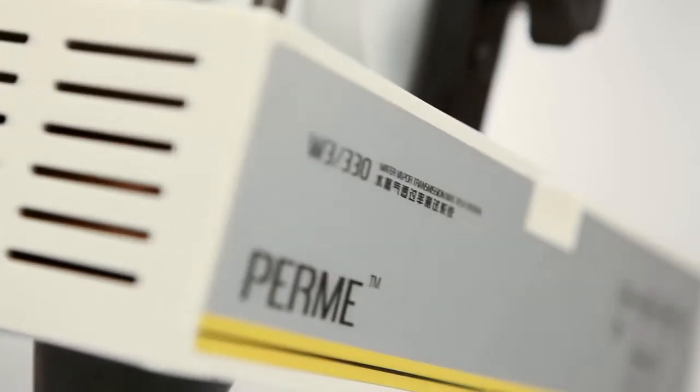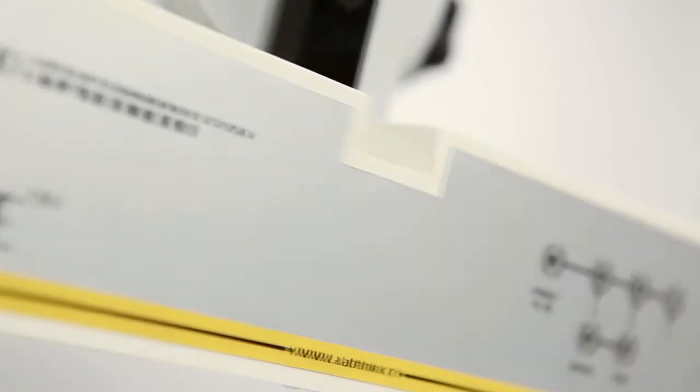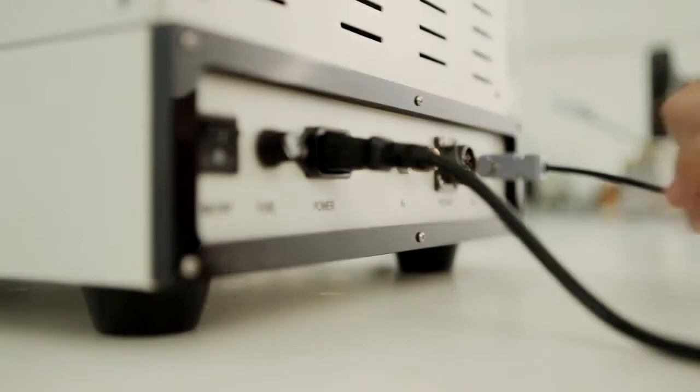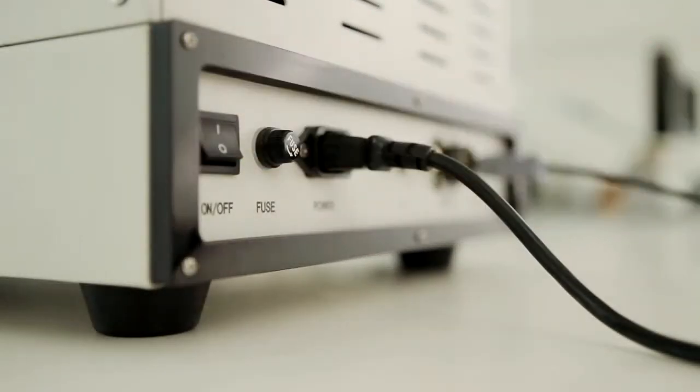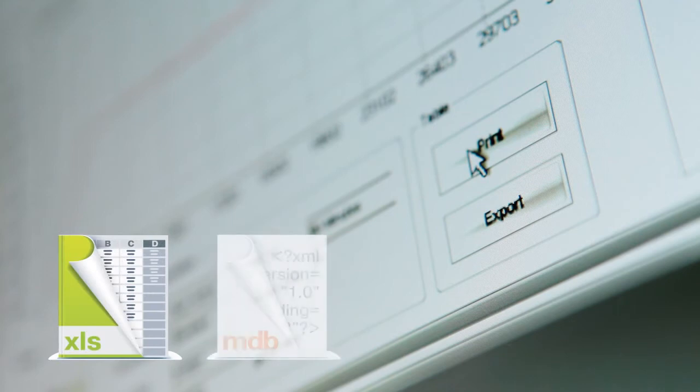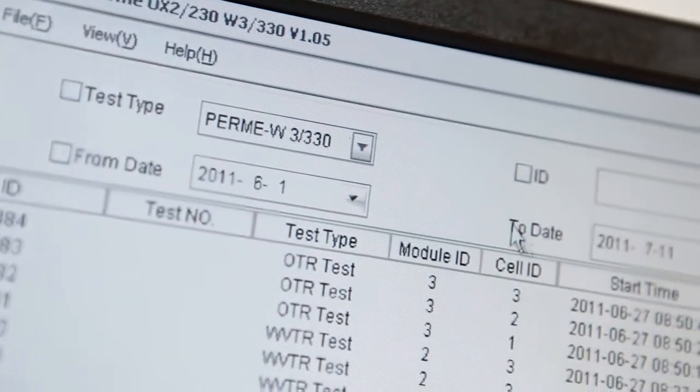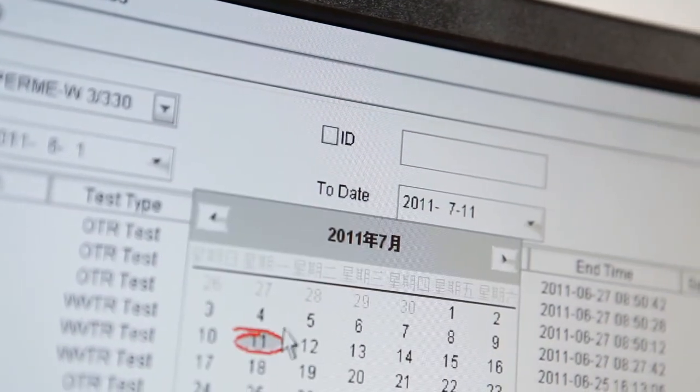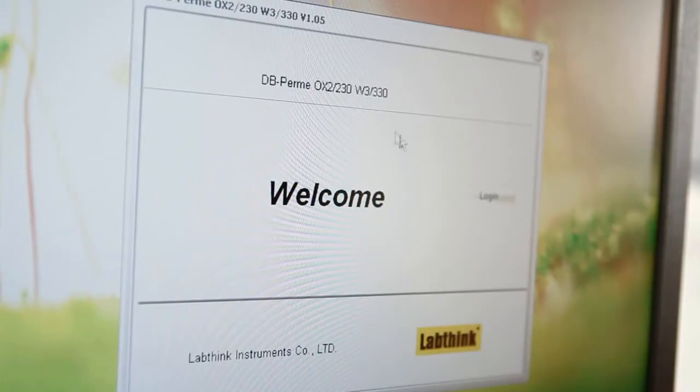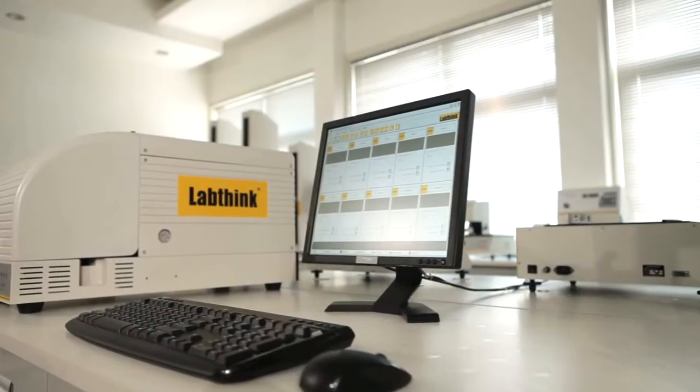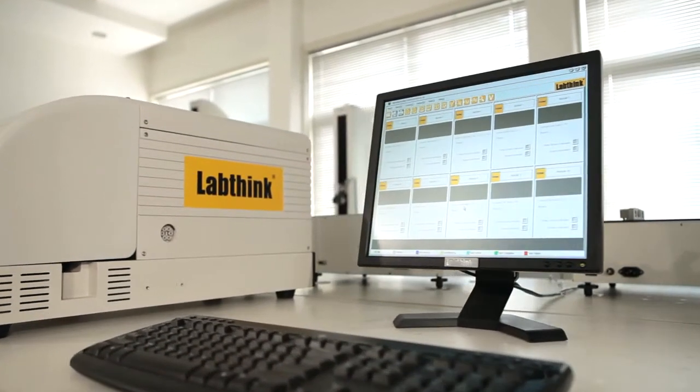The testing software, specifically designed by LabThink, has a user-friendly operation interface and visual display of real-time graphs and data that can be saved in Excel format and database format. It can carry out historical data search and comparison and reanalysis of raw data. This software can also operate and monitor the WVTR testing system and the OTR testing system at the same time.